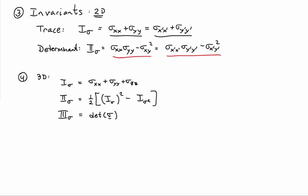In three dimensions there are three invariants for the three-by-three stress tensor. The first is still the trace — now including sigma zz. The second invariant has the form one-half times the trace squared minus the trace of the square of the stress tensor. The third invariant in 3D is the determinant of the three-by-three stress matrix.